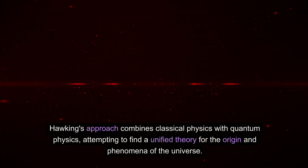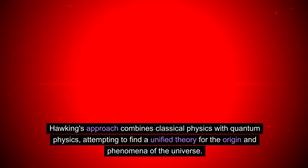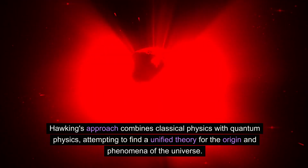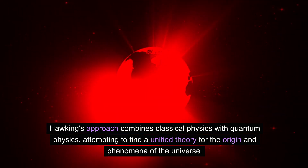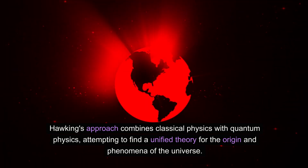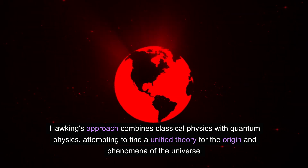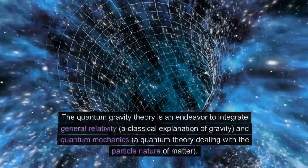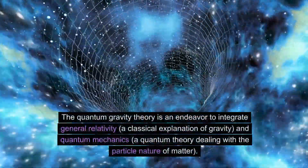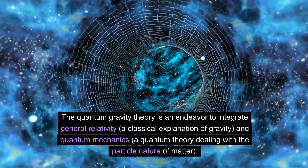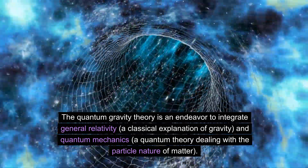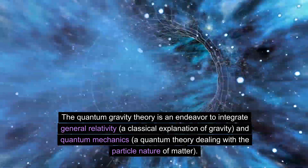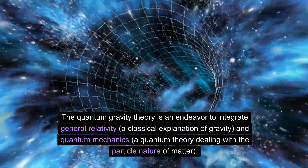Hawking's approach combines classical physics with quantum physics, attempting to find a unified theory for the origin and phenomena of the universe. Quantum Gravity Theory: The quantum gravity theory is an endeavor to integrate general relativity, a classical explanation of gravity, and quantum mechanics, a quantum theory dealing with the particle nature of matter.